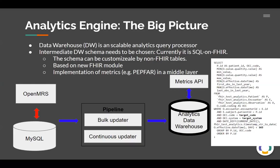People can bring their non-FHIR data as well. But we will heavily depend on the FHIR module that is being developed, either directly using it inside our code or querying it from the OpenMRS API. And finally, we want to support people who are not comfortable with that format. So if they don't want to write the SQL query, we want to support a metrics API that has some of the standard metrics, for example from PEPFAR, already implemented. And people can just use the API to get their metrics with a few configuration parameters. That's basically the big picture that we are after.